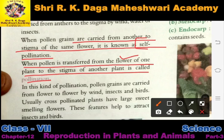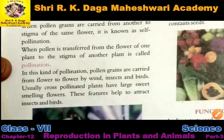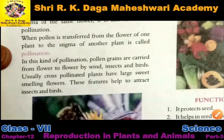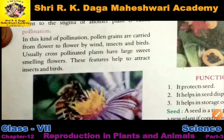There are two types of pollination that take place in flowers — self-pollination and cross-pollination. Agar ek hi flower mein pollination ho raha hai to that is self-pollination.